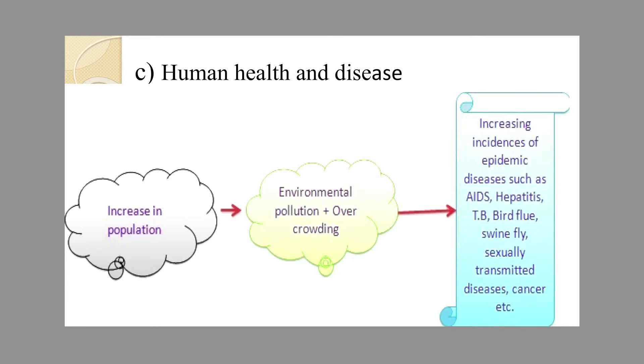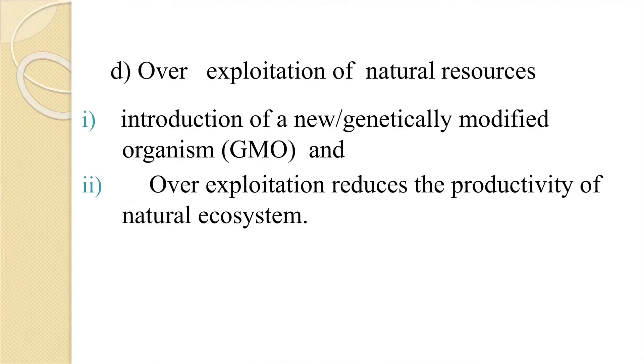The next ill effect of man-made ecosystems due to industrialization is the effect on human health. The pictorial depiction shows that increase in population is leading to environmental pollution and overcrowding. As a result, there is an increase in incidence of epidemic diseases such as AIDS, hepatitis, bird flu, swine flu, cancer, etc. All these diseases are reported at higher magnitude from congested populations of our country, where free air supply is also restricted and malnourished populations normally reside.